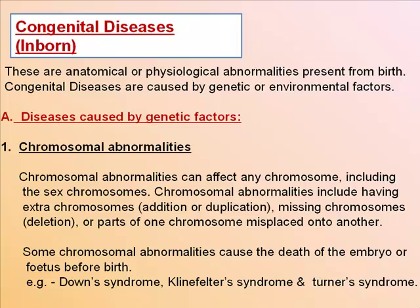Chromosomal abnormalities include having extra chromosomes (addition or duplication), missing chromosomes (deletion), or parts of a chromosome misplaced onto another. Some chromosomal abnormalities cause death of the embryo or fetus before birth. Examples include Down syndrome, Klinefelter syndrome, and Turner's syndrome.